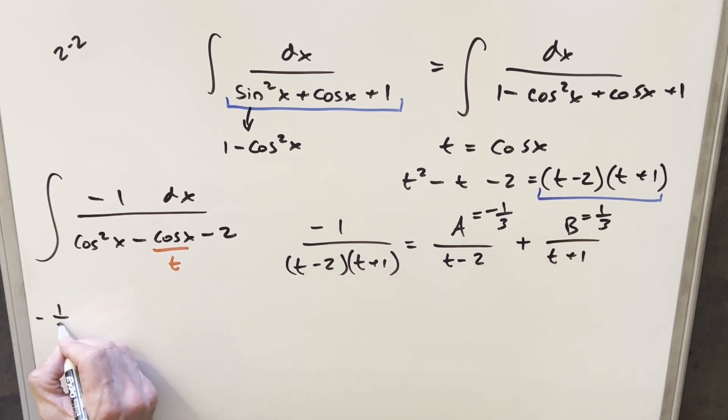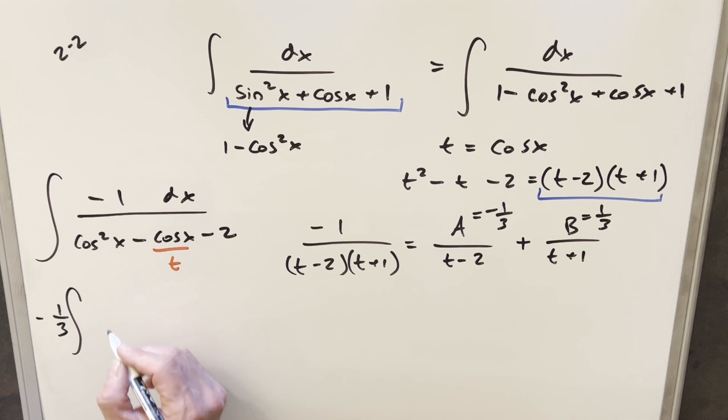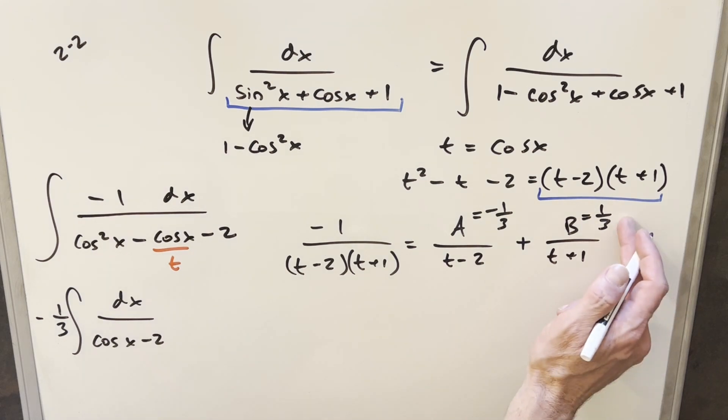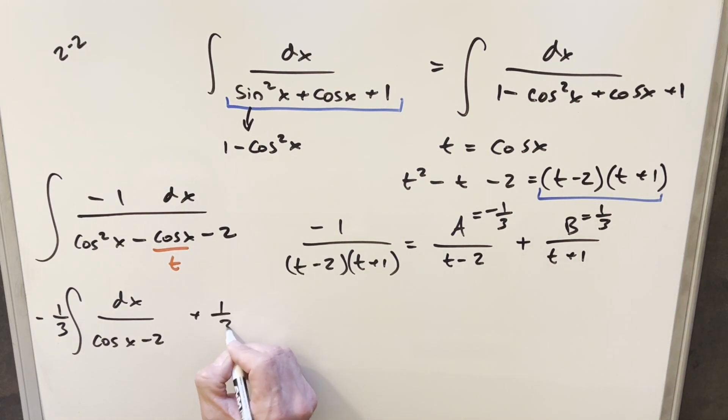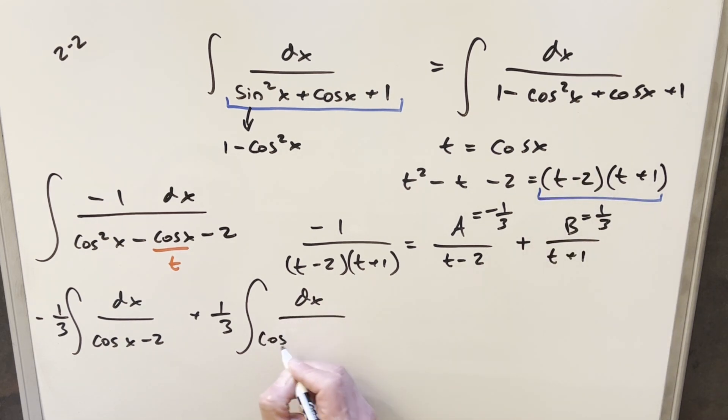I'm going to take the minus 1 third, bring it out front. Now remember our t is just cosine x. So our integral here for this first integral is going to be just cosine x minus 2. For our b value, I'll bring a 1 third outside of the integral. We'll have dx here, and this is going to be t plus 1, so we're going to have cosine plus 1. Now we have here two really similar integrals. We could probably solve it a few different ways, but what I want to do here is Weierstrass substitution.